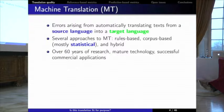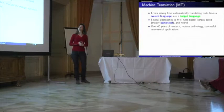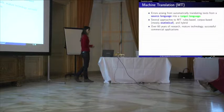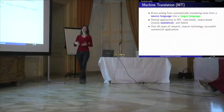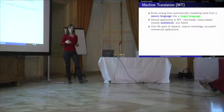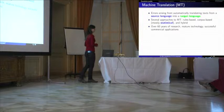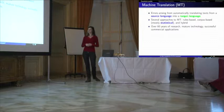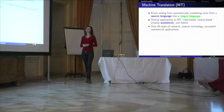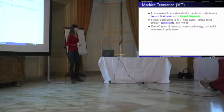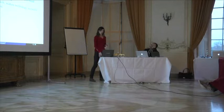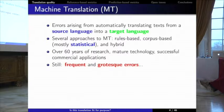The errors we're going to be looking at here are errors that arise from automatically translating text from one language to another — it's text translation, not speech translation. You've probably heard of many approaches to machine translation, from the standard linguistic rules-based approach to corpus-based statistical approaches like Google Translate or Microsoft's Bing Translate. There's been a lot of research over more than 60 years, and yet we find very frequently errors that can be considered very grotesque. You'll see some examples in a minute.